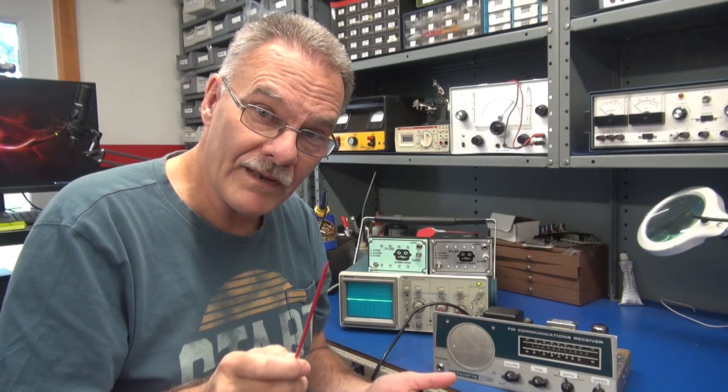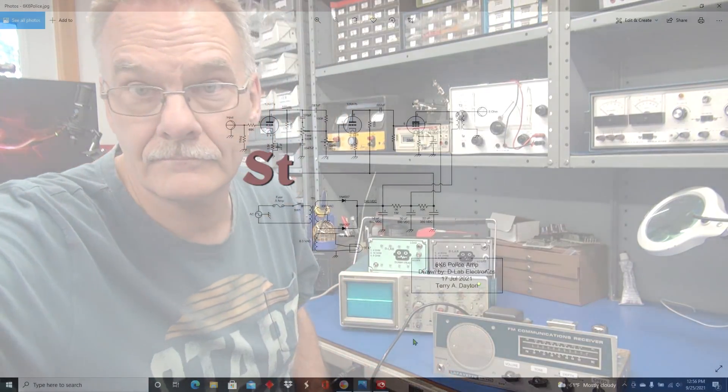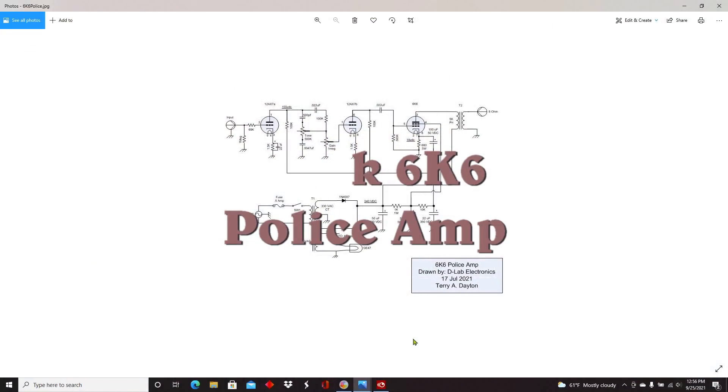Let's review the schematic for the new D-Lab 6K6 super police amplifier. On the screen I have the stock circuit from the 6K6 amp that you guys saw me build a few months ago utilizing the Lafayette HA50 police radio.